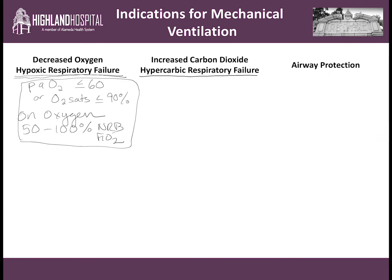Number two is hypercarbic respiratory failure. This is somebody who has too much CO2 and is having trouble eliminating the CO2. Generally, this is defined as a PaCO2 10 to 20 points higher than normal — a PaCO2 of greater than 60, or pH of less than or equal to 7.25. Some examples of this: COPD exacerbation, status asthmaticus, decreased CNS drive to breathe. All of these cause hypercarbic respiratory failure.